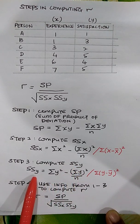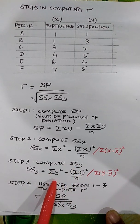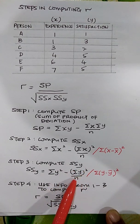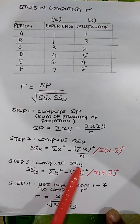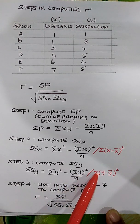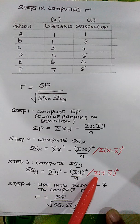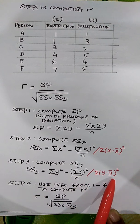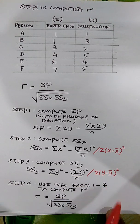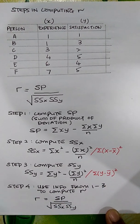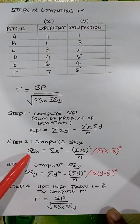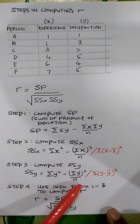Step three is to compute the sum of squares for Y. Sum of squares Y equals sum of Y² minus (sum of Y)² divided by n. This is the computational formula. You can also use the definitional formula: sum of (Y minus Y-mean)². Once you have SP, SS(X), and SS(Y), you can compute r.